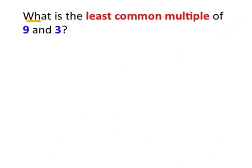In this video, we're being asked: what is the least common multiple of 9 and 3? What we're going to have to do in this problem is list all the multiples of both 9 and 3, and we're going to find the least or the smallest multiple that both of these numbers have that is in common.